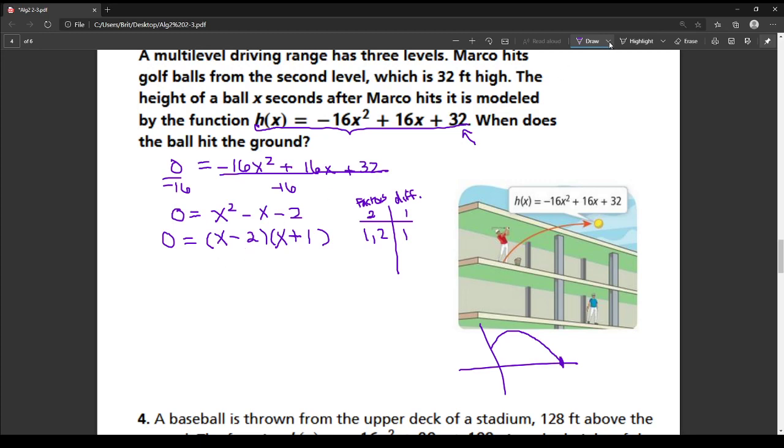So I'm going to take each of these factors, now that I've factored it, and set them equal to zero. So I have x minus 2 equals zero, and x plus 1 equals zero. So for this one, I'm going to add 2 to each side, and I get that x equals 2. And on this one, I'm subtracting 1 from each side, and I get x equals negative 1.